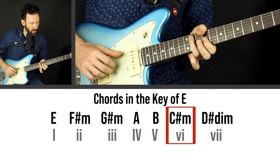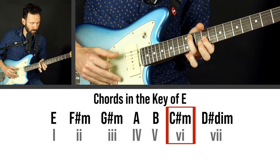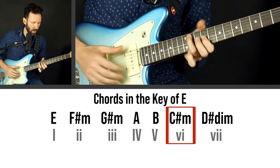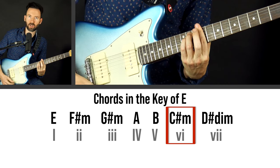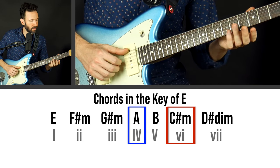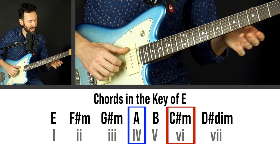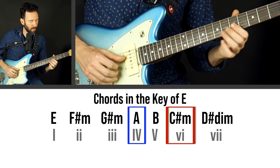So we start on the 6 chord - just C-sharp minor. Then we go to the 4 chord: E, F, G, A - A is 4.